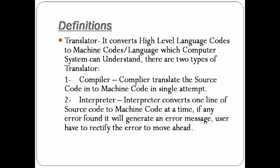Now let's go to the concept of translators. The first generation was machine language, where the programmer directly interacted with the computer using 0s and 1s, so there was no need for any translator. In the second generation, assembly language was introduced with mnemonic codes — for example, ADD for addition, SUB for subtraction, DIV for division. Since the computer could not understand these codes, an assembler was designed to translate assembly language into machine language.